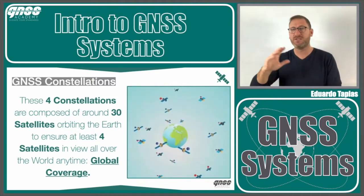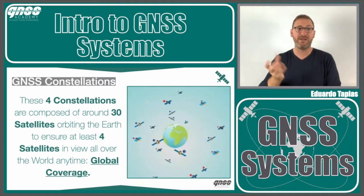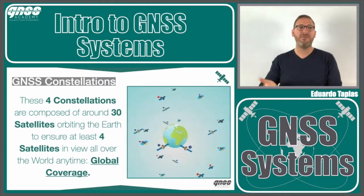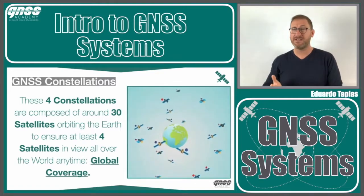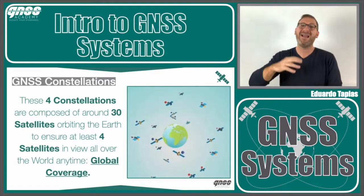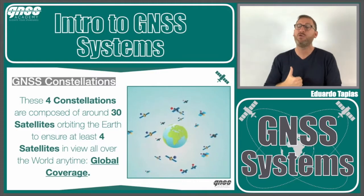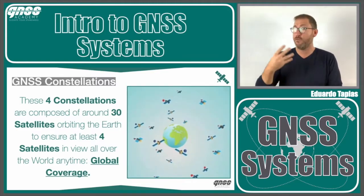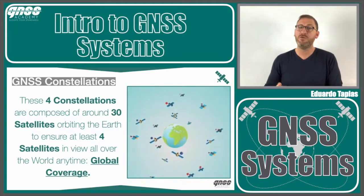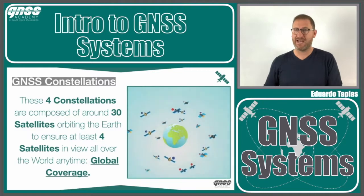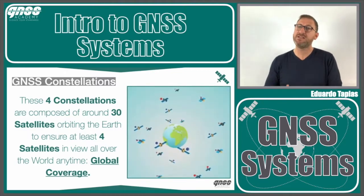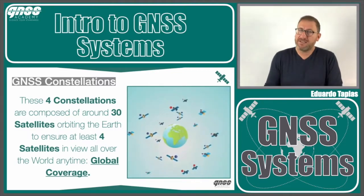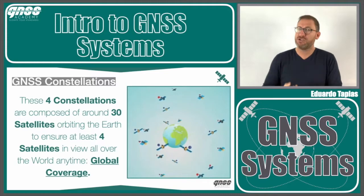More or less all these constellations are built with around 30 satellites — 24, 26, 27, or 30 depending on the deployment phase, but roughly around 30. We need at least 27–30 satellites to ensure that at least four satellites are in view everywhere, at all times, because we need at least four satellites to estimate a position and time.